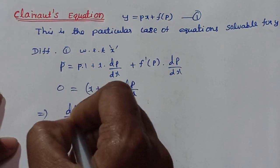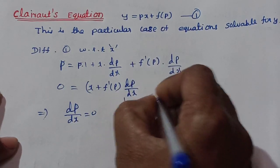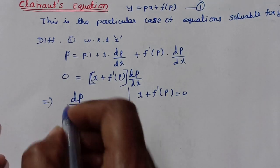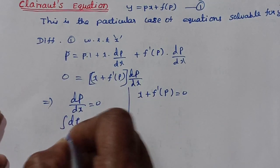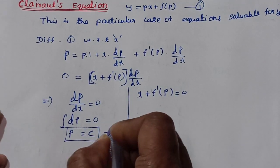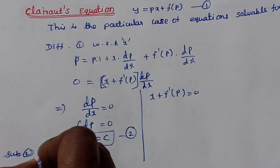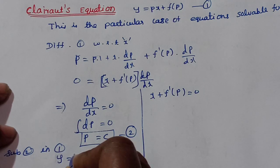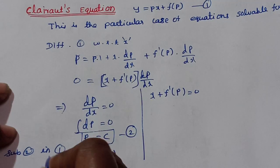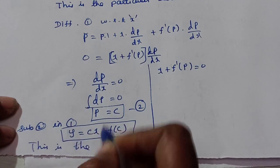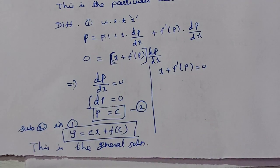So we have two cases. Case 1: dp/dx equals 0. Integrating, p equals c, an arbitrary constant. Case 2: x plus f-prime of p equals 0. For Case 1, we substitute p equals c back into equation 1 to eliminate p. This gives y equals cx plus f of c, which is the general solution.